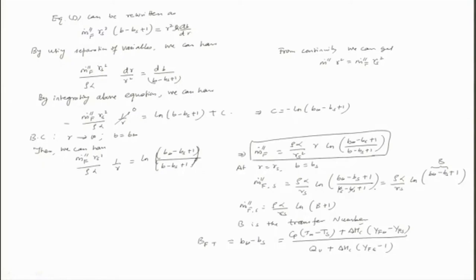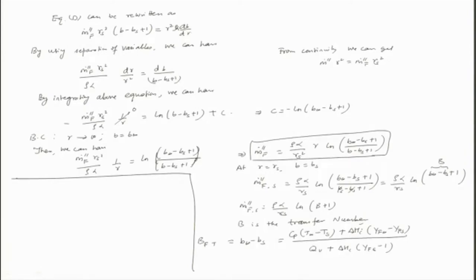We need to find T_S and Y_Fs — a very important question. The simplest approach is to use the boiling temperature T_b. Another way is to estimate the transfer number B: if T_S is known, Y_Fs can be found, and knowing the partial pressure also helps determine that.